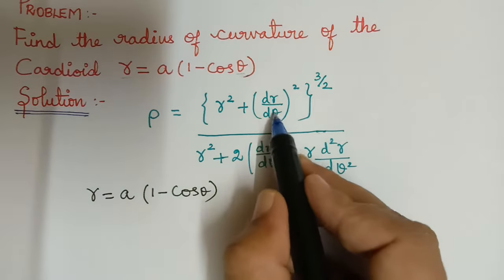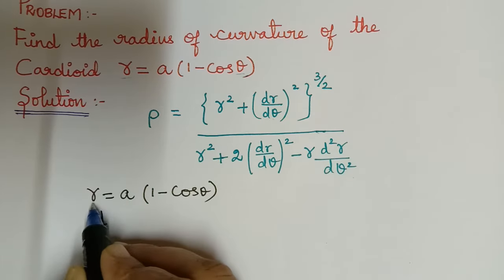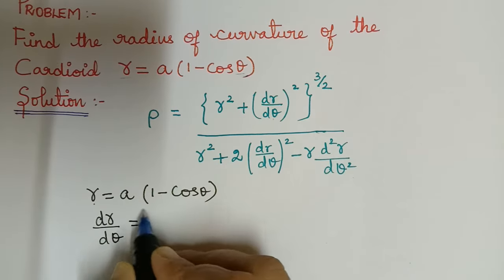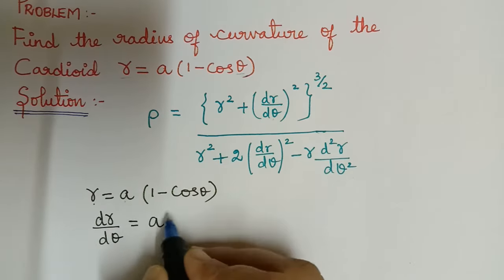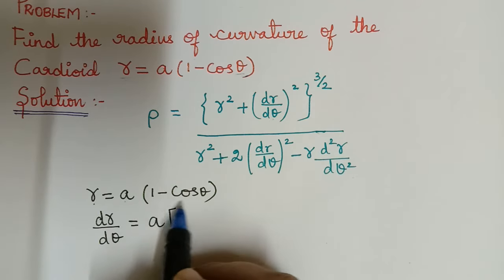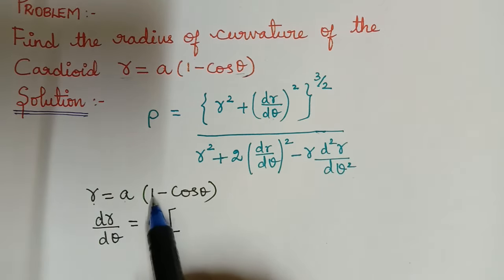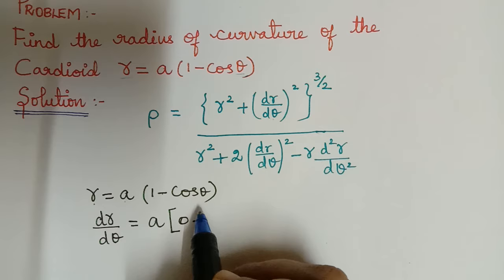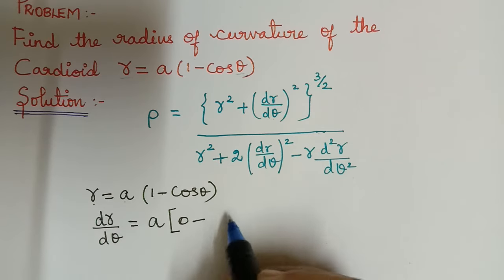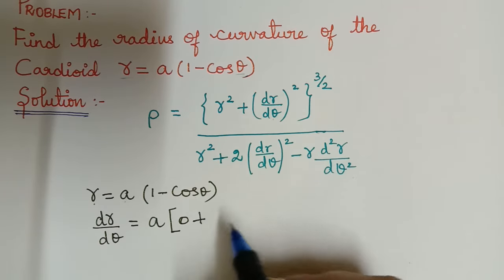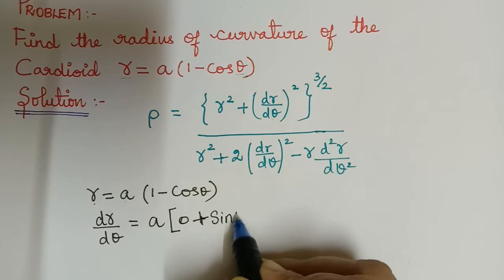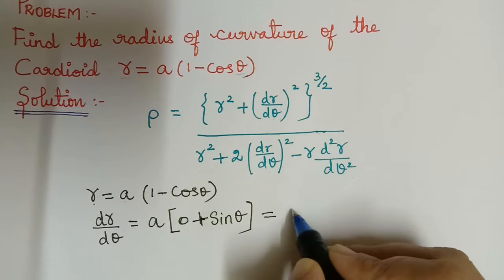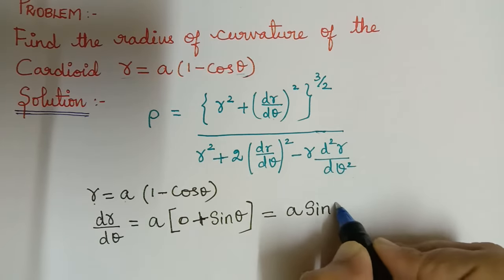First we shall find dr/dθ by differentiating r with respect to theta. a is a constant in multiplication, and inside the bracket: the differentiation of 1 is 0, and minus the differentiation of cos theta is minus sin theta. So minus times minus gives plus sin theta, and we get dr/dθ equal to a sin theta.